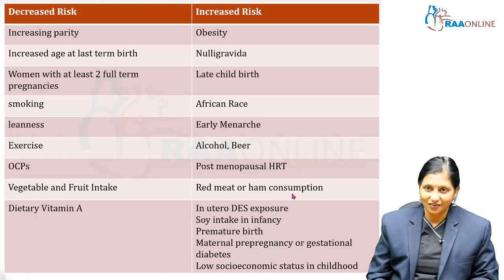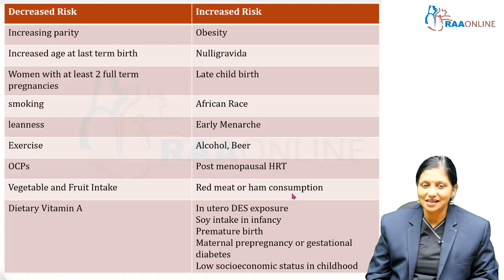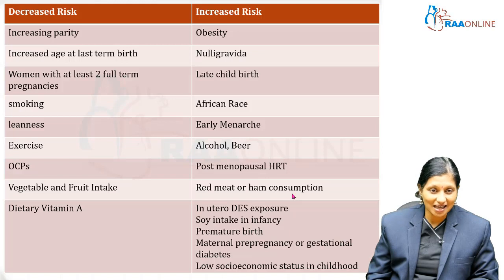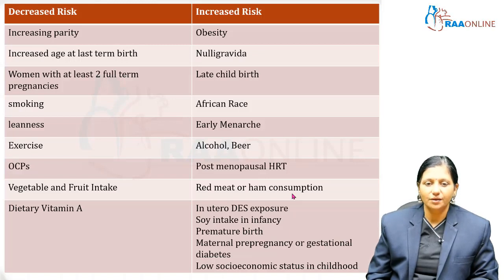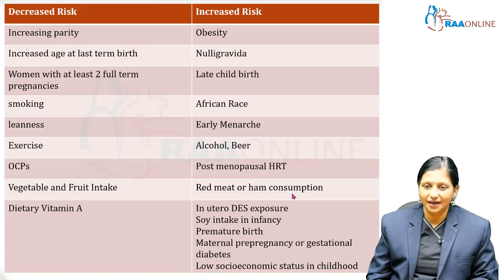Decreased risk of myomas is seen with increasing parity, increased age at last term birth, and women with at least two full-term pregnancies. There is also decreased risk associated with smoking, slim or leanness, exercising individuals, increased vegetable and fruit intake, and dietary vitamin A intake.